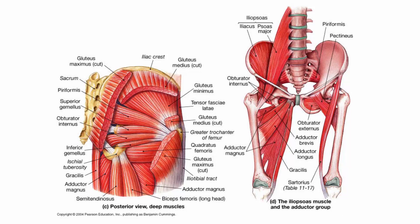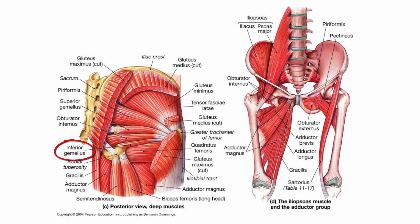Here are some external hip rotators. We have the piriformis, which abducts the thigh. The superior gemellus laterally rotates the thigh. The obturator internus also laterally rotates the thigh. The inferior gemellus laterally rotates the thigh. Up here we have some hip flexors: the psoas major, which flexes the thigh, and the iliacus muscle, which also flexes the thigh. Together, when they pass underneath the inguinal ligament, they become known as the iliopsoas.